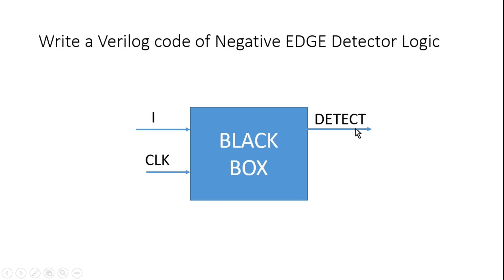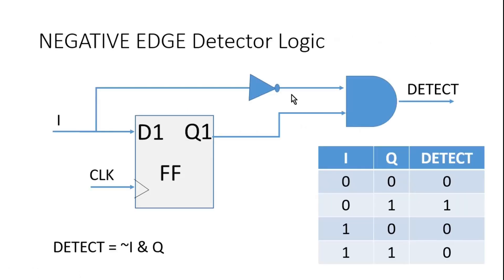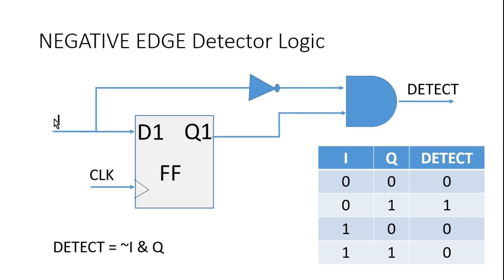Let me show you its logic circuit diagram and then I will show you its Verilog code. This is our negative edge detector logic. Again we have one flip-flop, but here at input i, I am putting a NOT gate and then applying it to an AND gate. Q is directly applied to this AND gate. If you want to know the details of this logic circuit diagram, I have created a separate video — you will get its link in the description section as well as in the i-bar section.